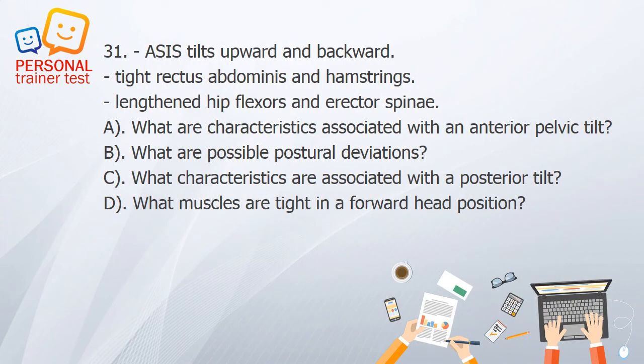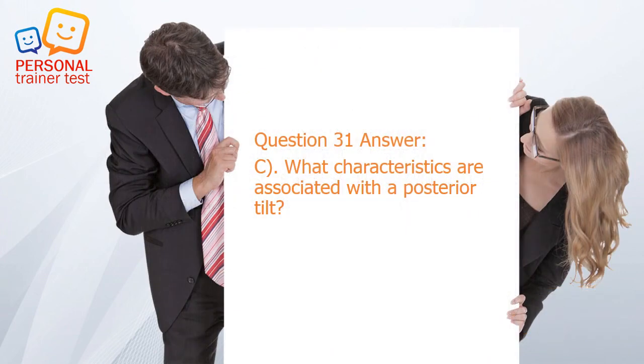Question 31. A. What are characteristics associated with an anterior pelvic tilt? B. What are possible postural deviations? C. What characteristics are associated with a posterior tilt? D. What muscles are tight in a forward head position? Answer: C. Posterior pelvic tilt: ASIS tilts upward and backward, tight rectus abdominis and hamstrings, lengthened hip flexors and erector spinae.